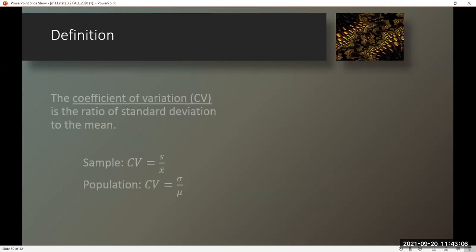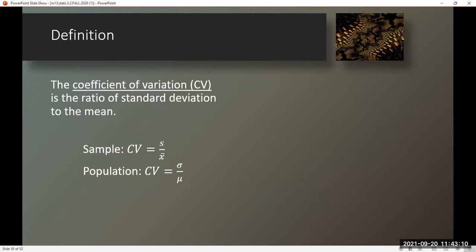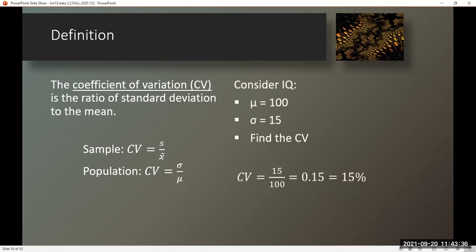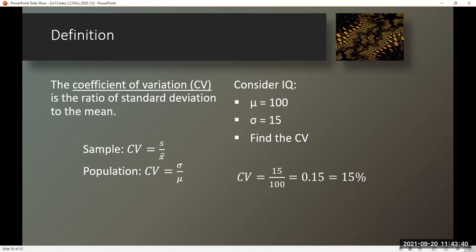Definition. The coefficient of variation, or CV, is the ratio of standard deviation to the mean. For a sample, CV equals S divided by x-bar. For a population, CV equals sigma divided by mu. Quick example: considering IQ with a mean of 100 and standard deviation of 15, the CV is 15 divided by 100, which is 0.15, or 15%. The coefficient of variation is often presented as a percentage.